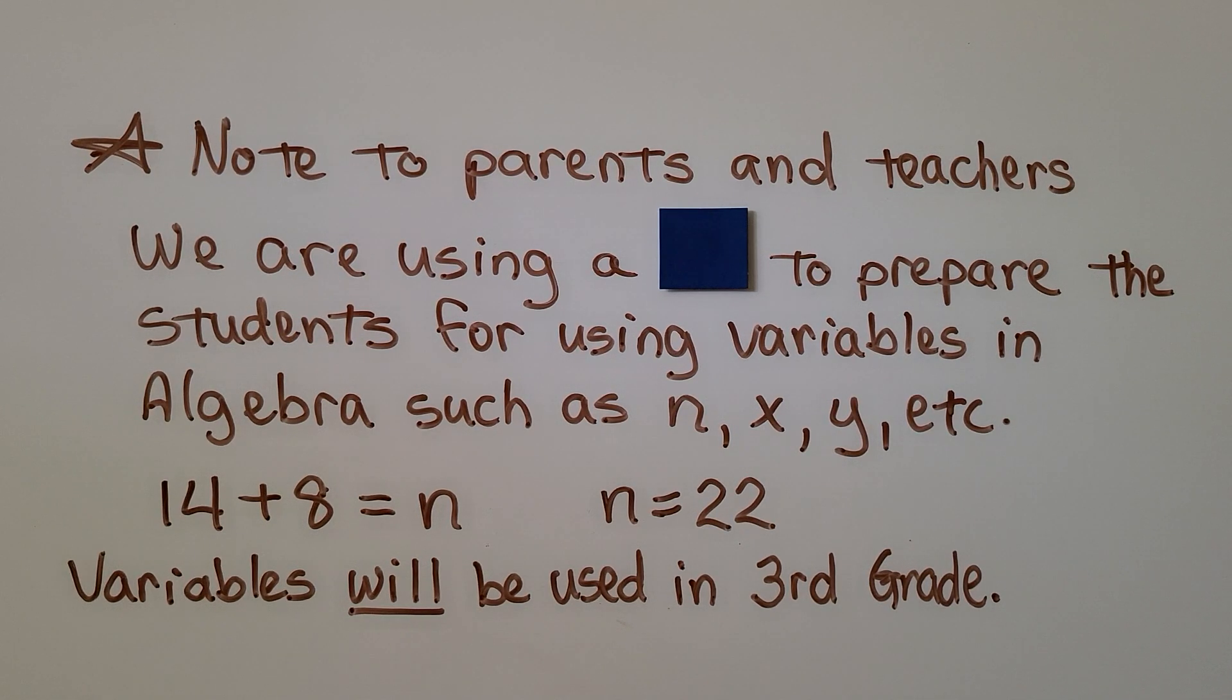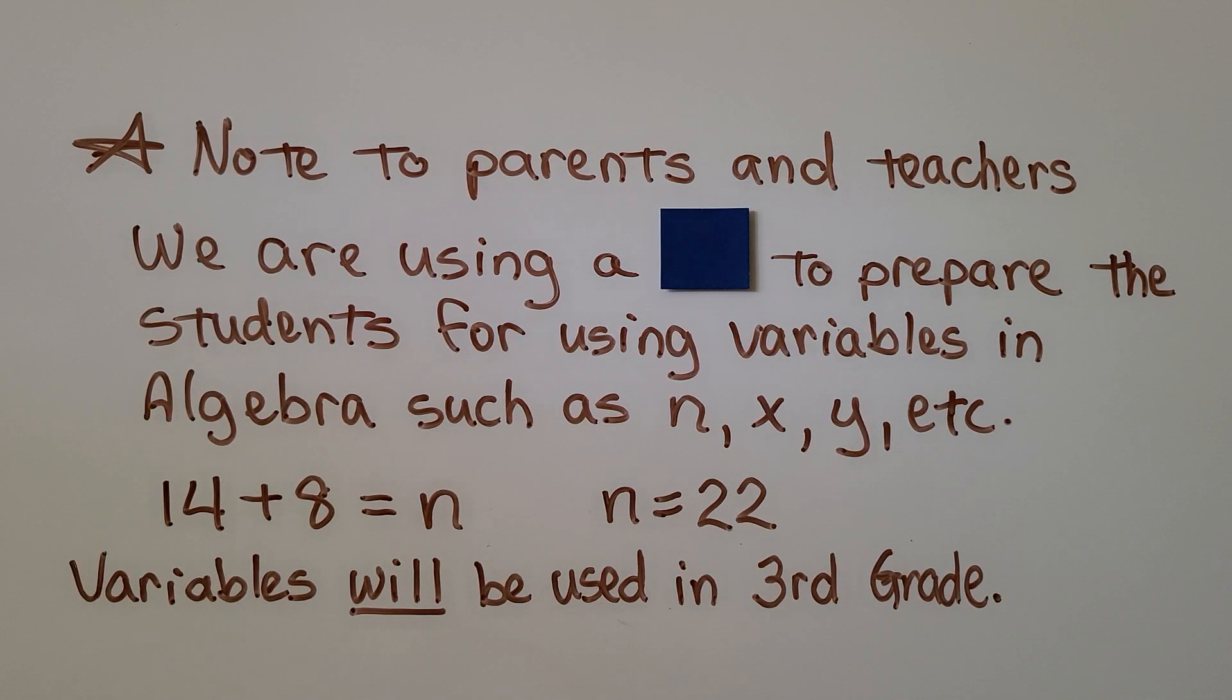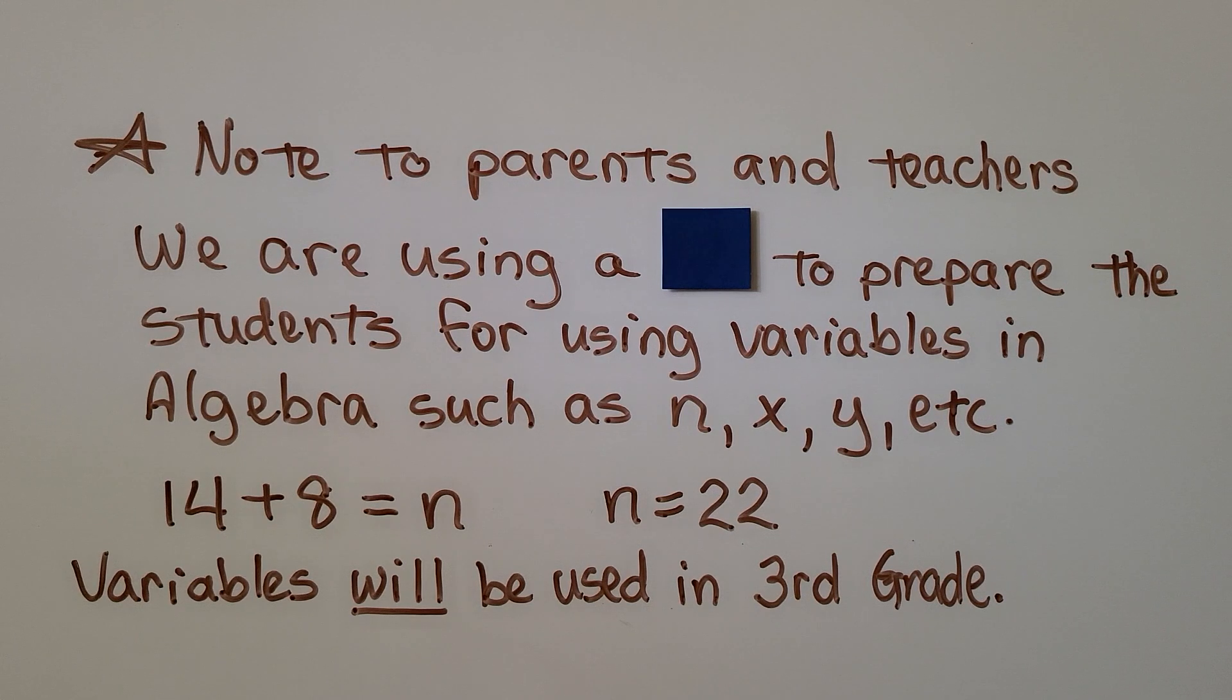A quick note to parents and teachers, we're using a square to prepare students for using variables in algebra such as n, x, y, etc. So 14 plus 8 is equal to n, n is equal to 22. Variables will be used in third grade.